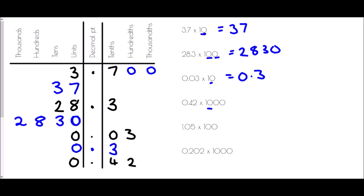Finally, 0.42 times 1000. There are three zeros, so each digit moves three places to the left. The zero from units goes to thousands, the 4 goes to hundreds, the 2 goes to tens, and we need a placeholder zero in the units. We don't need the leading zero thousands digit, so the answer is 420.